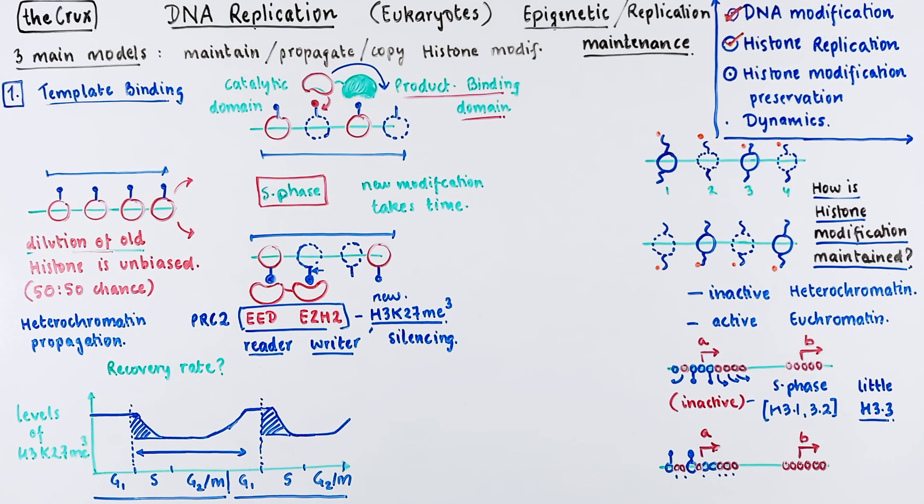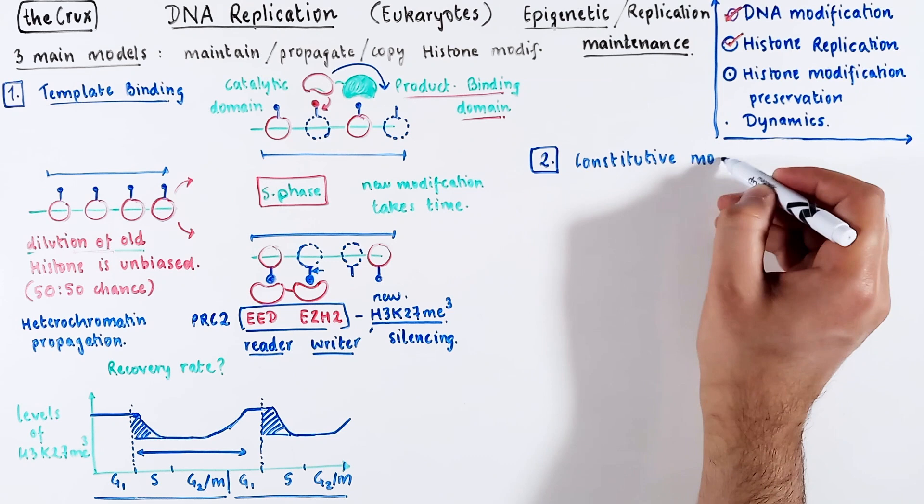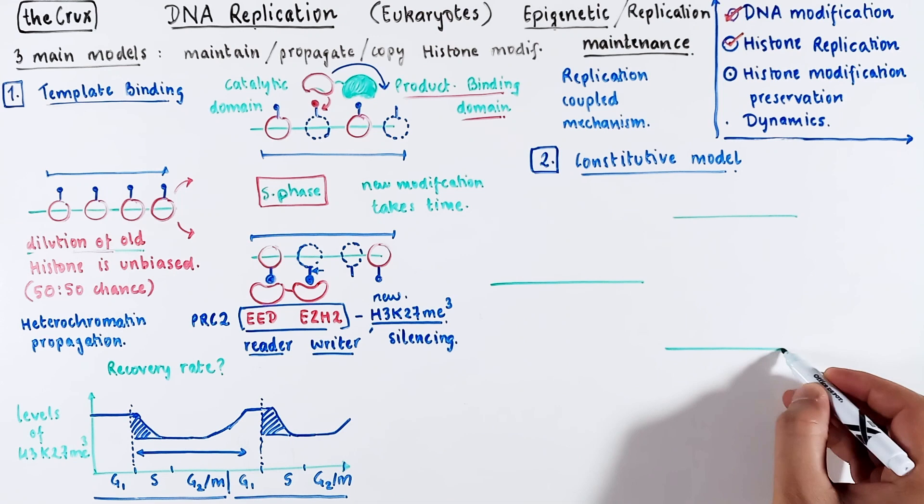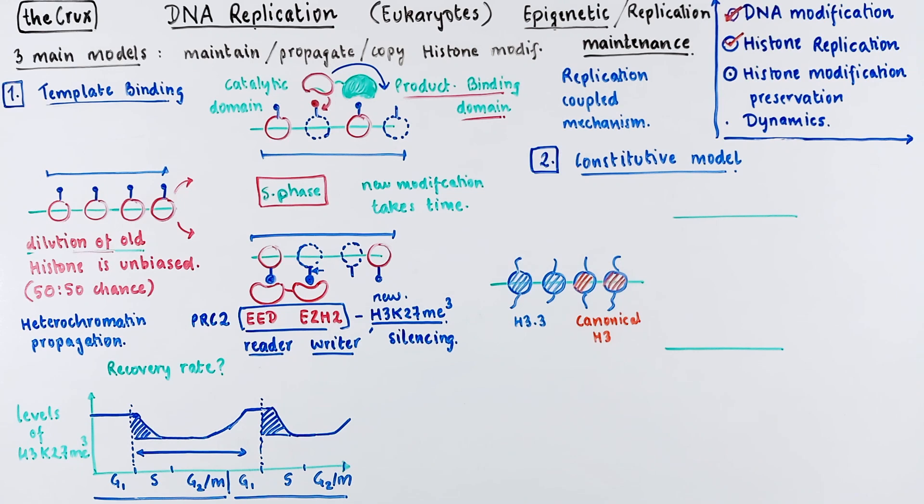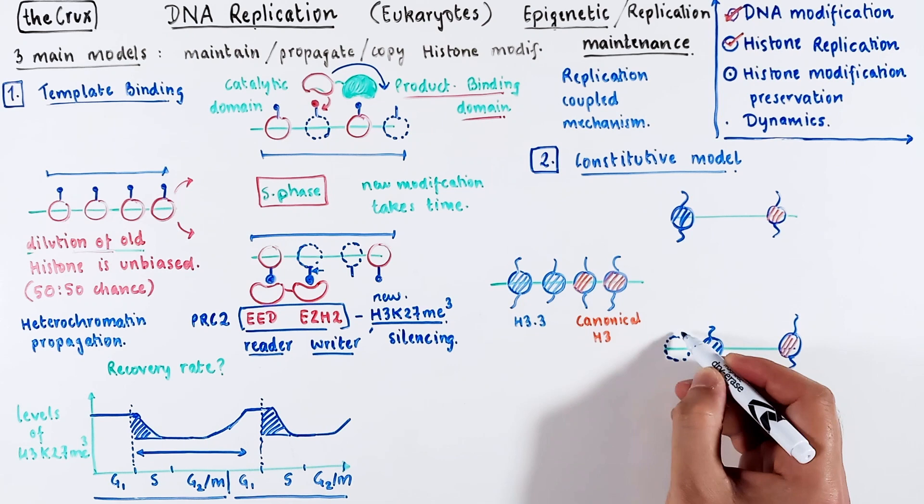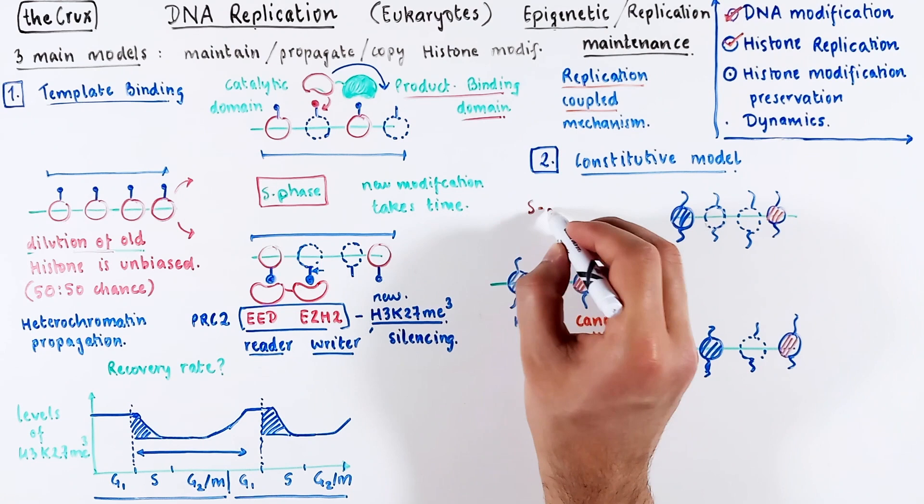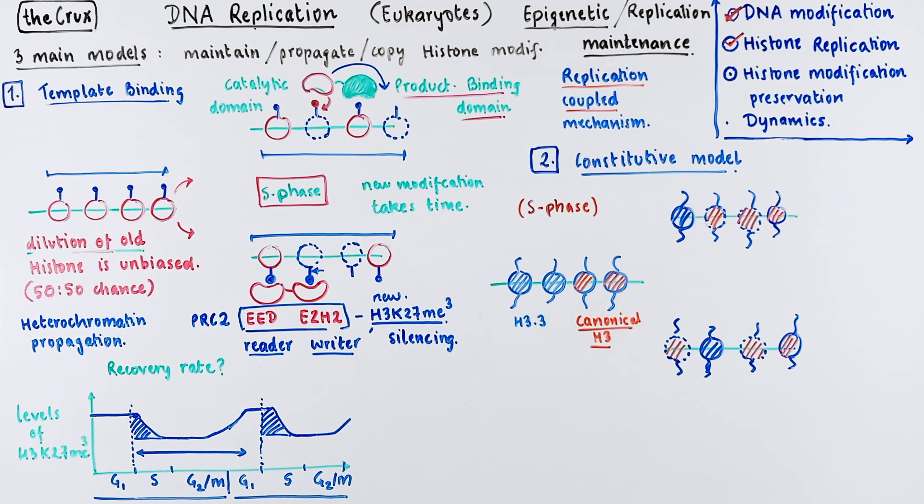The second model is called the constitutive model. This one is a replication coupled mechanism. Let's start with the same basic picture. Assume we have a locus with a mix of H3.3 and canonical H3 histones. Upon replication, these histones are distributed in a 50-50 ratio. Since this is replication coupled, which means it is happening in the S phase, only canonical H3 histones are present to fill in the empty spaces. To add complexity to this, let's just say that the older H3 canonical histones had a modification.